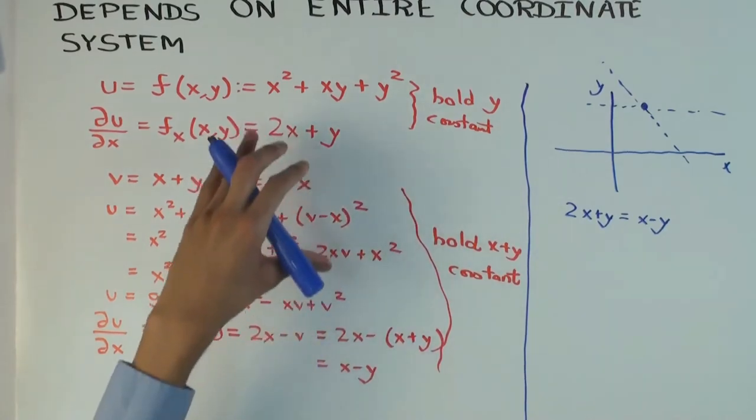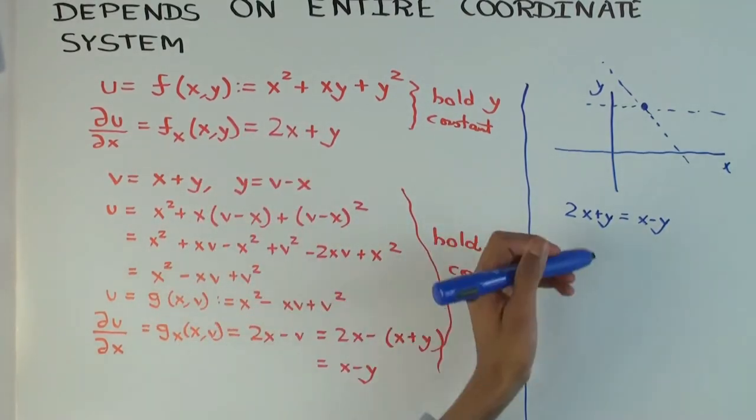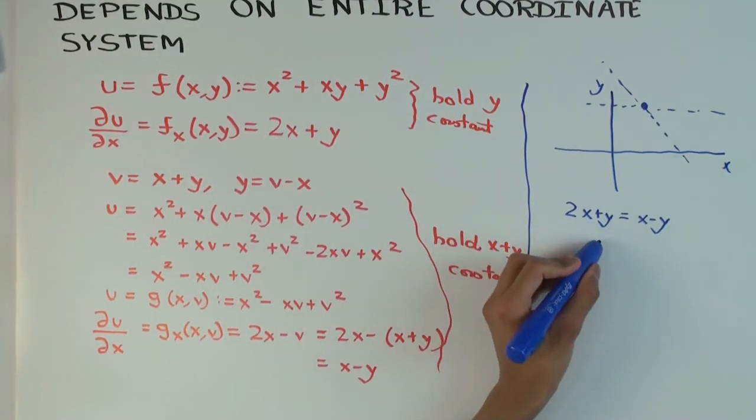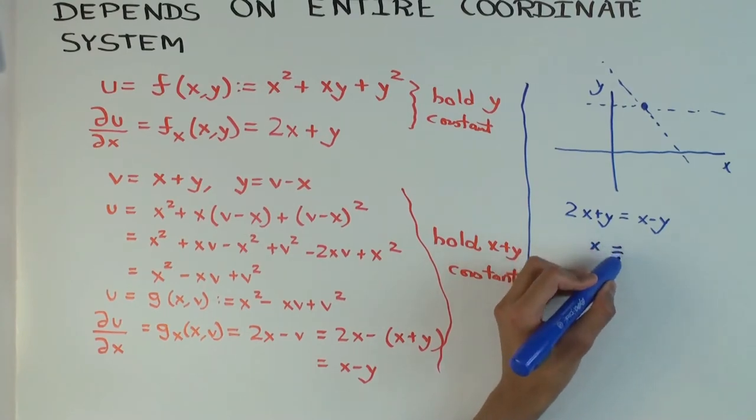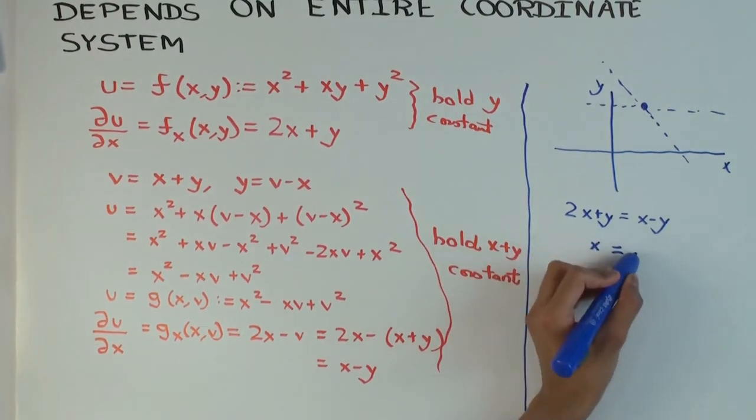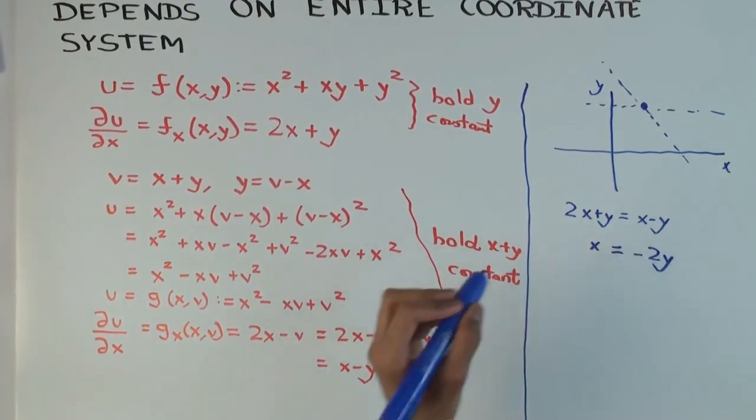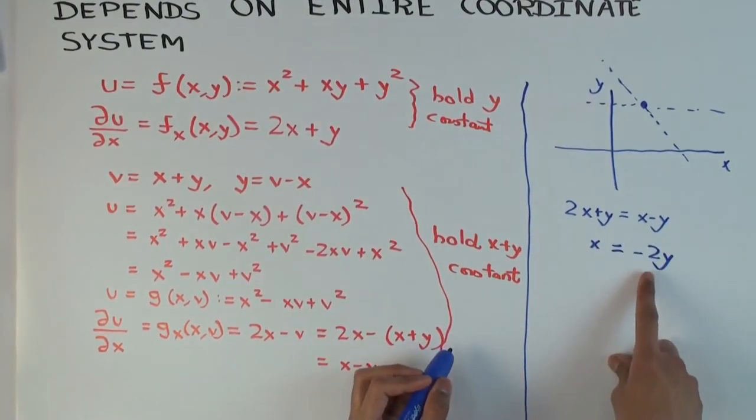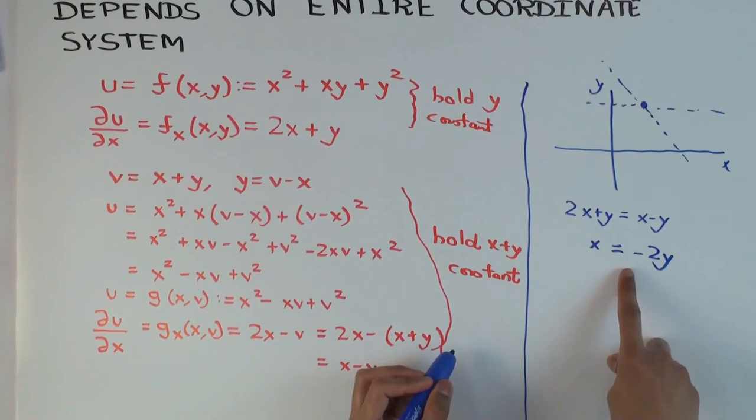So 2x plus y equals x minus y. So if you want these two partials to be equal, then what do you get? So you get 2x minus x, it's x equals? It's x equals? 2y. Oh, minus 2y. Minus 2y. Your mental math was a little off. Minus 1 by that. So what that means is x equals minus 2y.